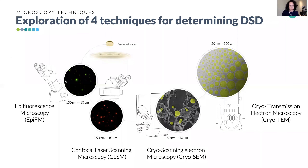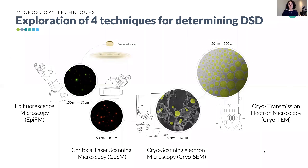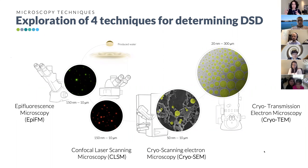We used epifluorescent microscopy and confocal microscopy — both part of optical microscopy — where we can see droplets and features in the range from 250 nanometers up to 10 micrometers. For electron microscopy we used cryo-SEM and cryo-TEM, where we analyze down to the nanoscale — comparable in size to COVID-19, just to give you a reference of which ranges we're talking about.